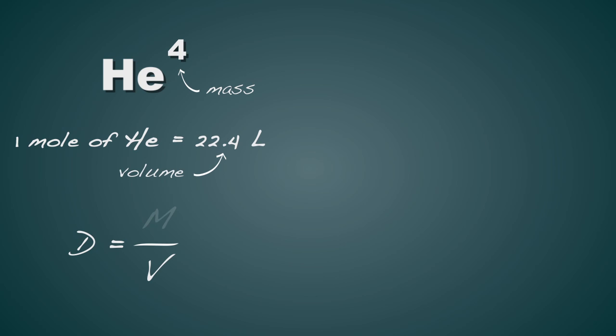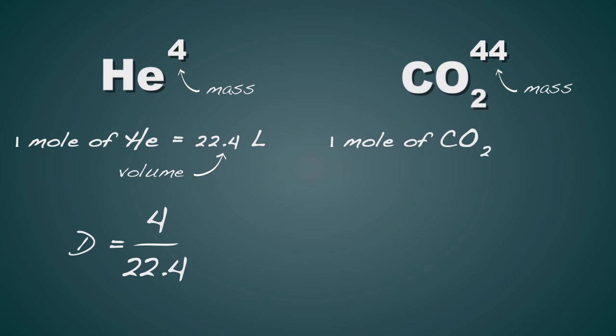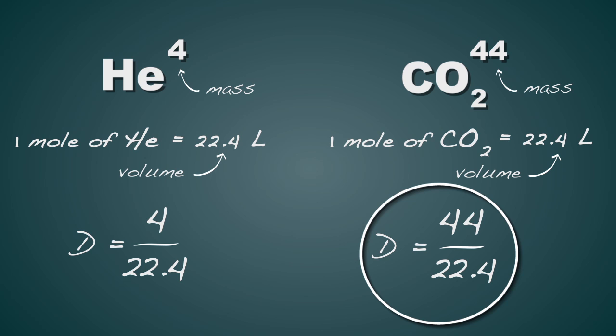However, if I have carbon dioxide, the molar mass of carbon dioxide is 44 grams per mole. It's a larger molecule. If I have one mole of carbon dioxide, it would still occupy 22.4 liters. So the density would be 44 divided by 22.4 liters. That is a greater density.